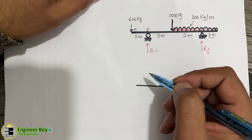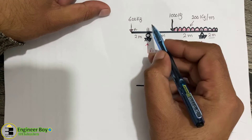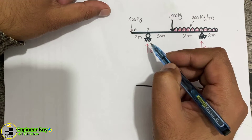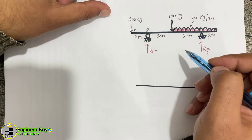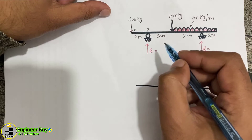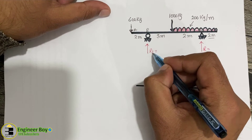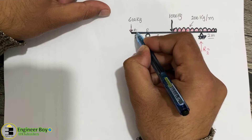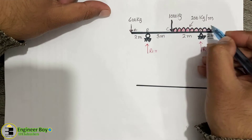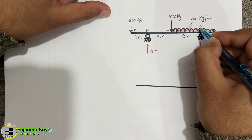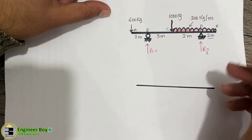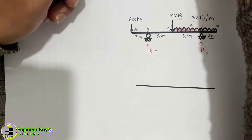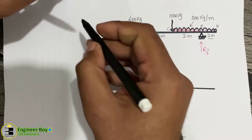Previously on Engineer Boy we determined the support reactions of a single overhanging beam. This time we have a double overhanging beam. We have points A, B, C, D, and E, and in this video we will be determining reaction R1 and reaction R2.